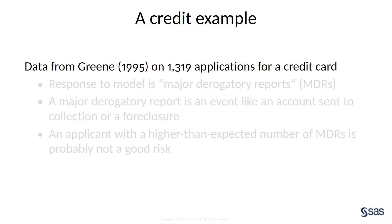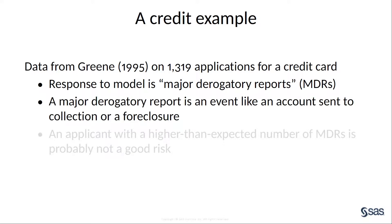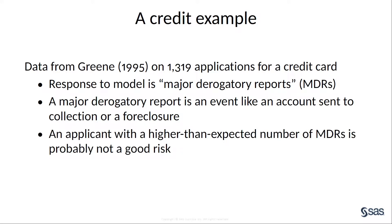Consider this example, which uses credit card application data. The response in this model is the number of major derogatory reports, or MDRs. Major derogatory reports are serious negative elements of a credit history, like a foreclosure or an account that's referred to a collection service. From the point of view of a credit card issuer, an applicant with a predicted number of MDRs that is high is less attractive as a credit risk.